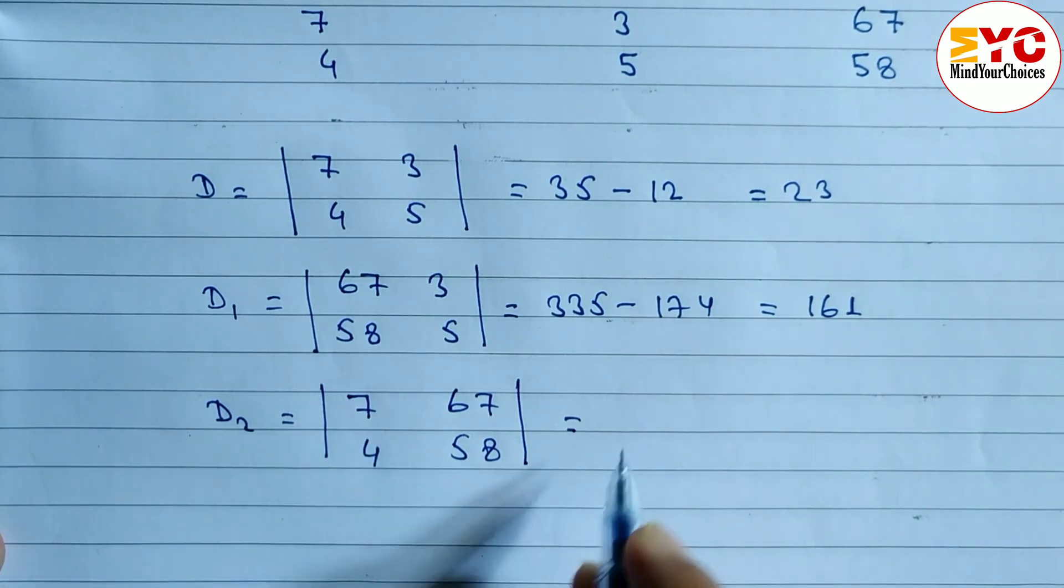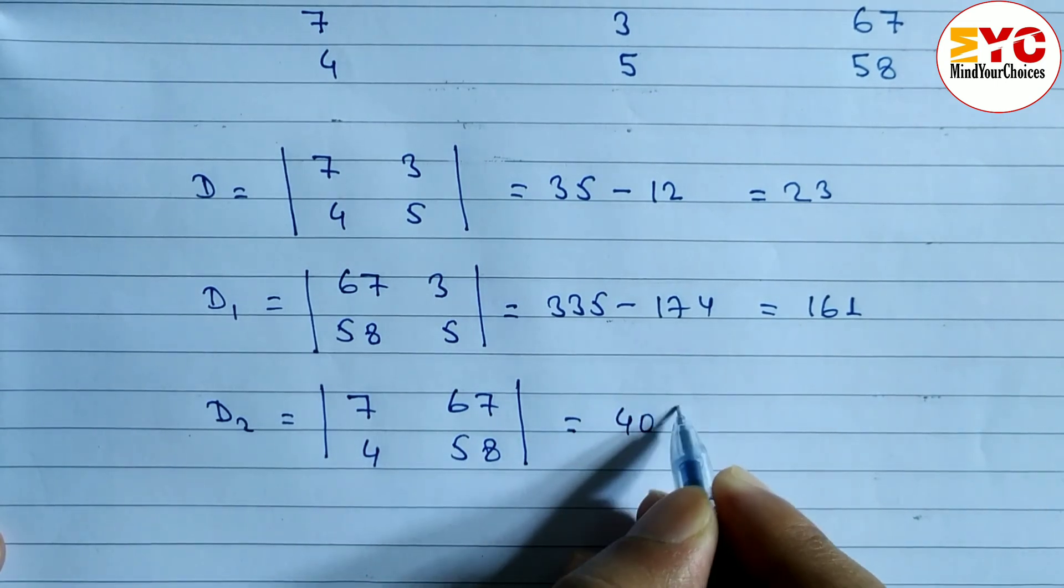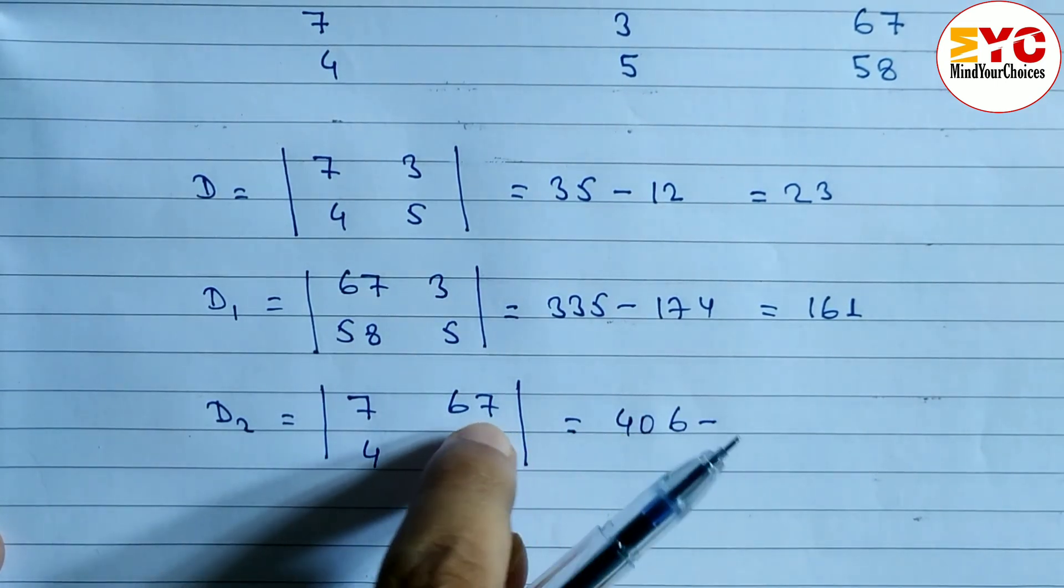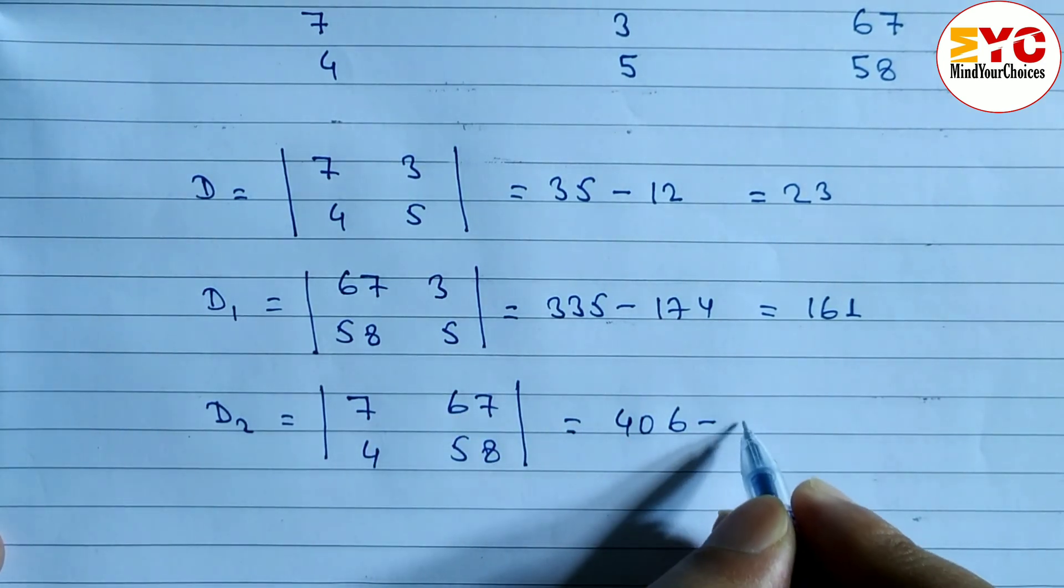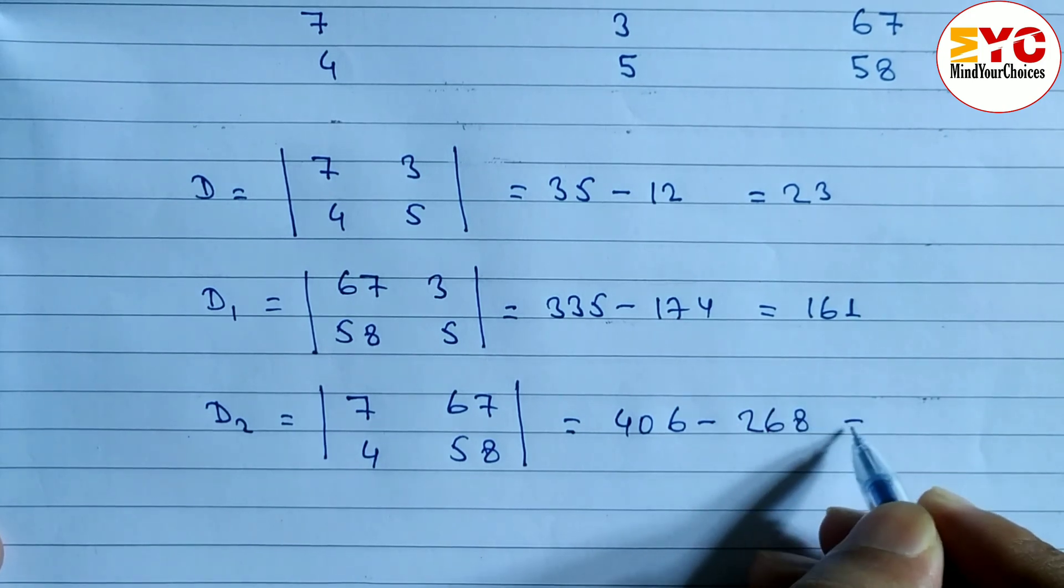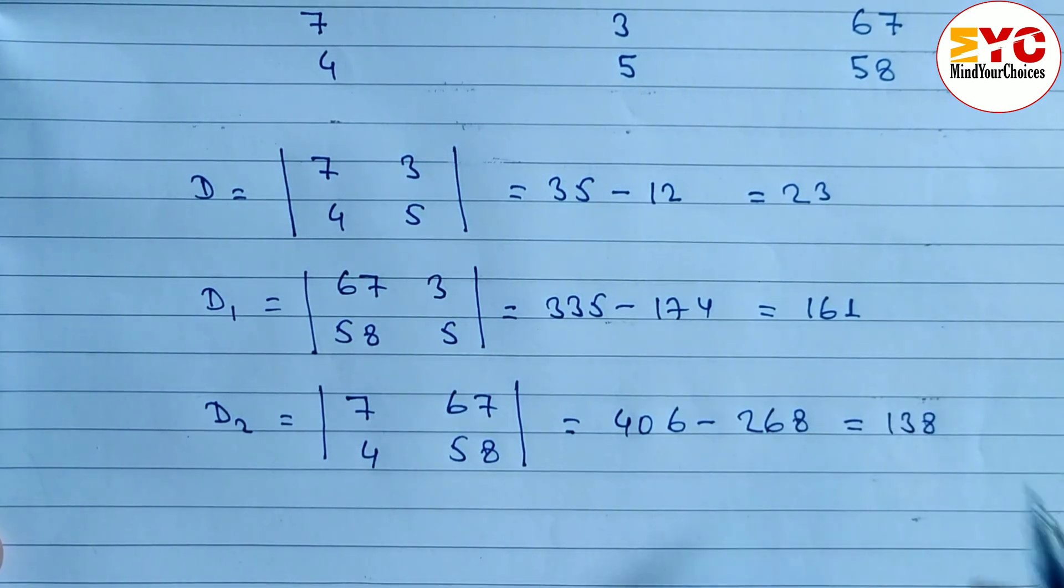7 into 58. 7 into 56. 6, 5, 35 and 5, 40. So 406 minus this two multiply 67 into 4. 7, 4 is 28. 8, 2, 24, 25, 26. So 268 and when you subtract we get here 138.